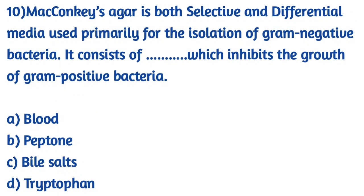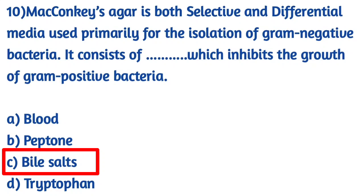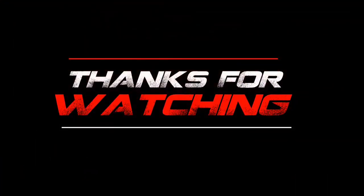Question number 10, our last question: MacConkey agar is both a selective and differential media used primarily for the isolation of gram-negative bacteria. It consists of bile salts, which inhibit the growth of gram-positive bacteria. The right answer is option C, bile salts, which inhibit gram-positive bacterial growth and allow us to isolate gram-negative bacteria. That's all for this video — bye bye, take care.